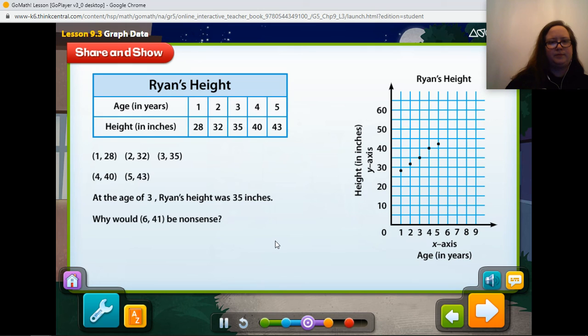Why would the point 6, 41 be nonsense? Well, let's think of this. If we look at this, we go over 6, and then we go to 41. 41 would be here. That means he would be getting shorter. Now, while as we get older, we may shrink a little bit at his age of 5, and then going to 6, he's not going to shrink. This is nonsense, because this point would suggest that Ryan was getting shorter as he got older.